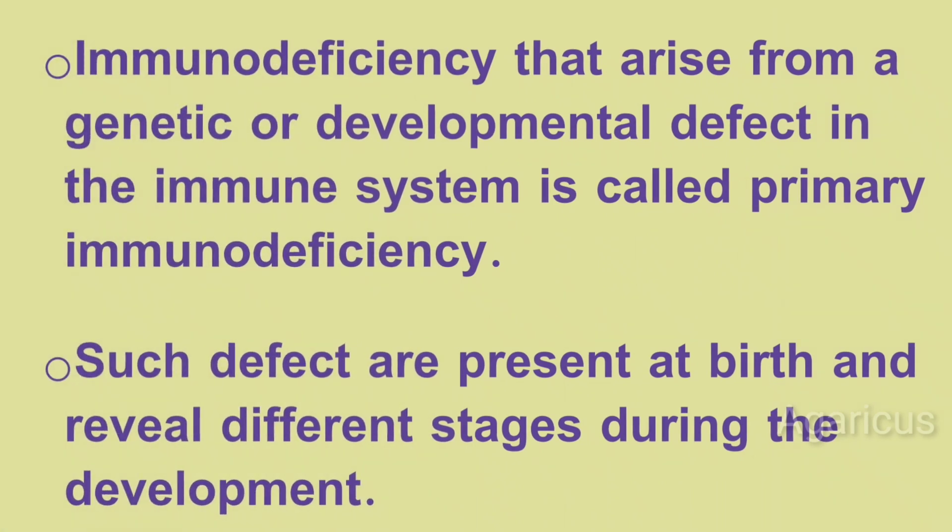Immunodeficiency that arises from a genetic or developmental defect in the immune system is called primary immunodeficiency. Primary immunodeficiency arises from a genetic or hereditary trait. Such defects are present at birth and reveal themselves at different stages during development.